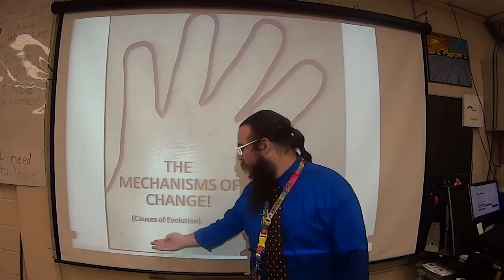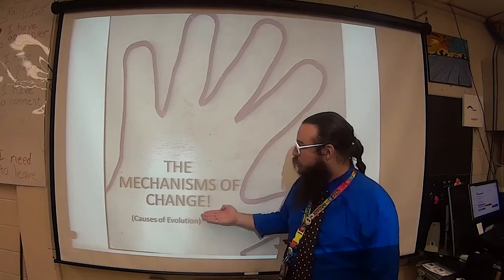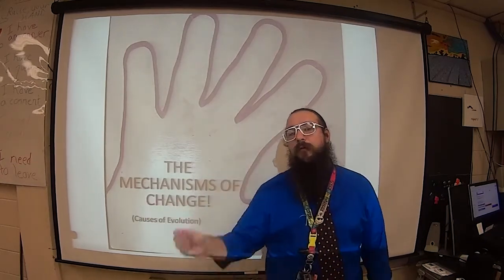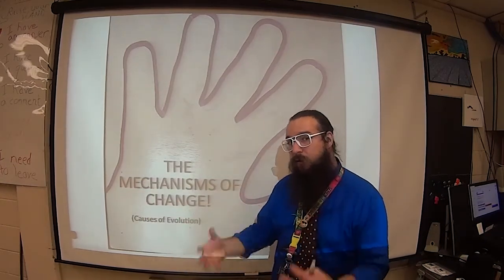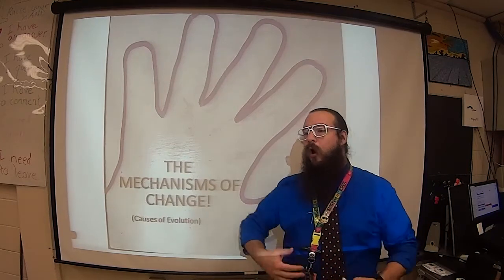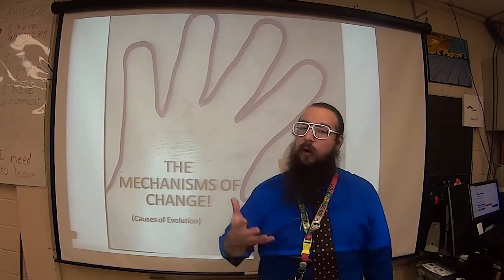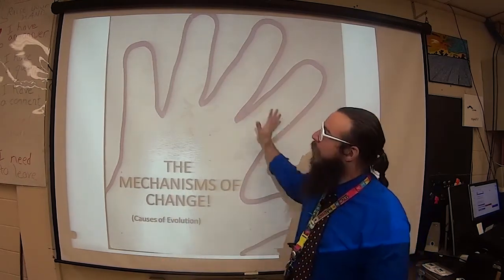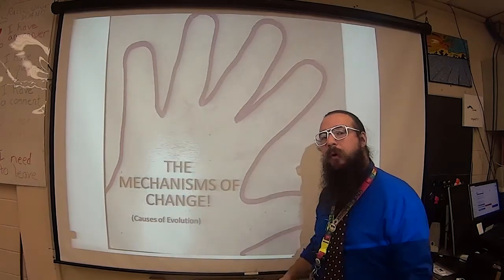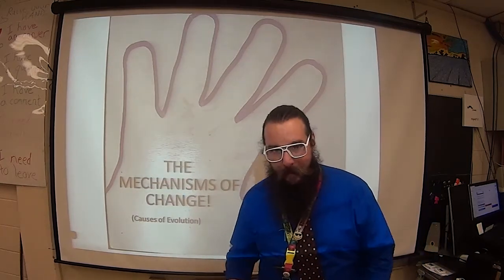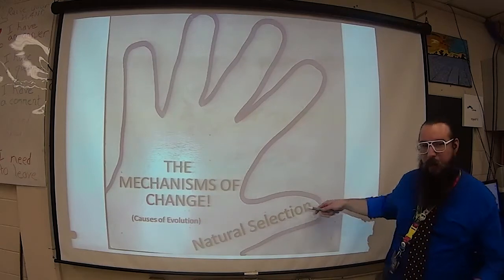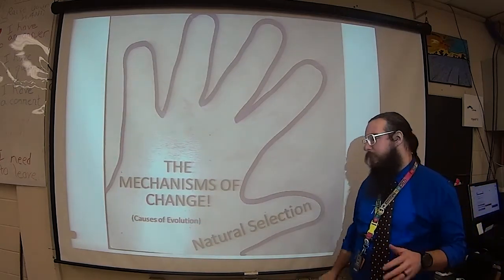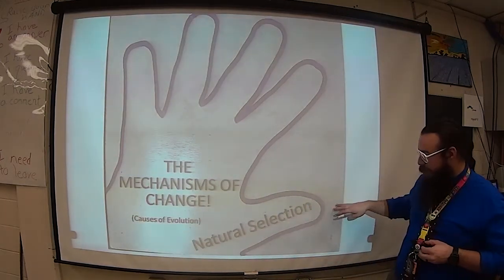Our definition for evolution is a change in the gene frequencies — how frequently we see a gene — within a population over generations. Or, more commonly, a change to a group over generations. Not just over time, but over generations. All these mechanisms will have a reproductive factor within them. The big thumb, the main mechanism we've already discussed, is natural selection.